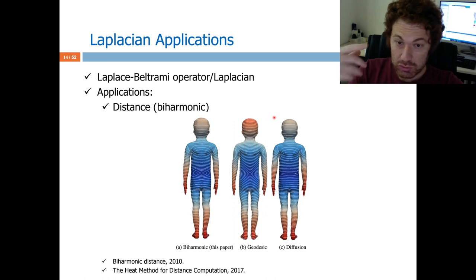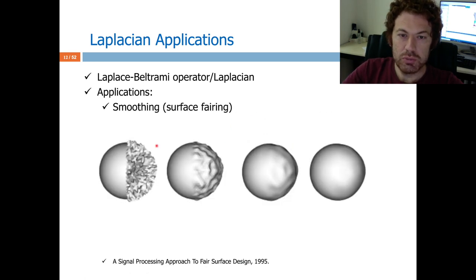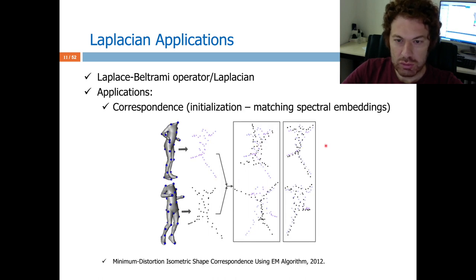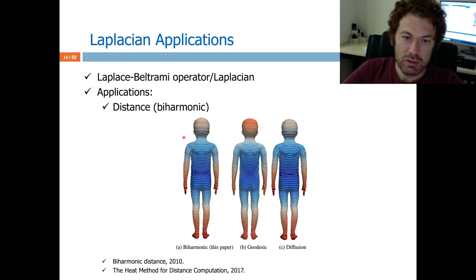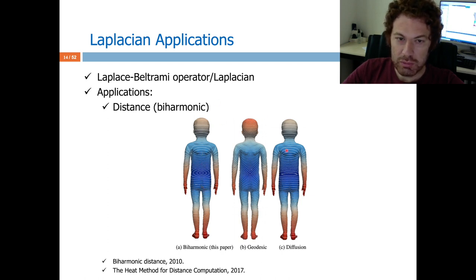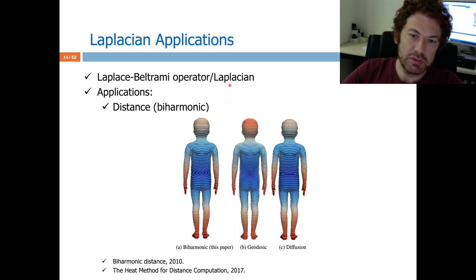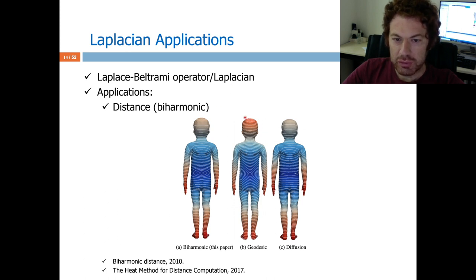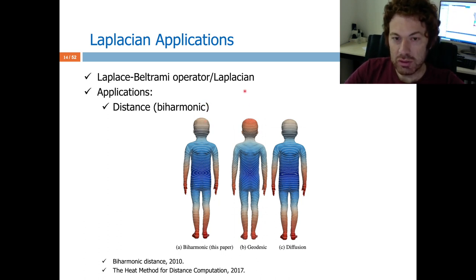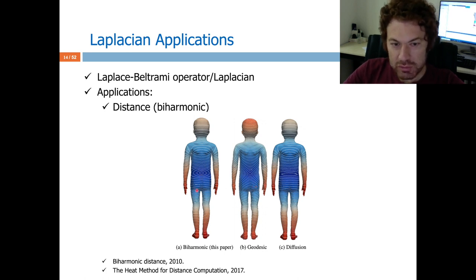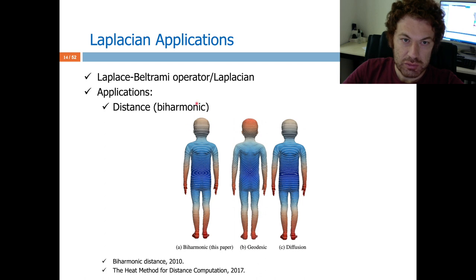Distance computation is another extremely important topic in geometry processing. For instance, we may want to compare pairwise distances and their consistency to match two shapes. The bi-harmonic distance and diffusion distance are made possible, as well as the diffusion distance — these are based on the heat flow. They are made possible by the spectrum of the Laplacian and are comparable to the geodesic case. They are even more advantageous when there is topological noise, because the heat flow goes through many paths unlike the single shortest path in the geodesic. Thanks to that multiple-path analysis, we get a more topologically robust distance.